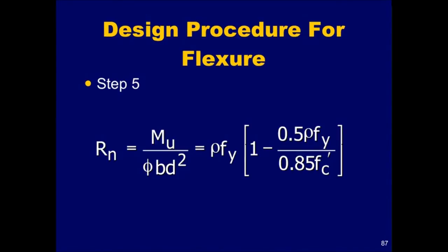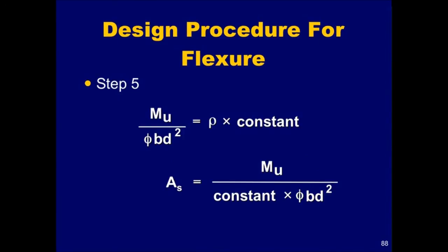A simplified procedure to determine A sub s starts by examining the equation for the nominal flexural strength. As was seen in the previous graph, these variables are approximately constant up to two-thirds of the maximum reinforcement ratio. Therefore, the strength equation can be rewritten in terms of this constant, which depends on the compressive strength of the concrete and the yield stress of the reinforcing steel. This equation, in turn, can then be solved for the required area of steel, A sub s. All that remains is to determine the constant, which can be done for different material strengths, assuming that rho is equal to two-thirds of the maximum reinforcement ratio.